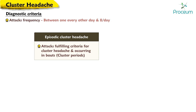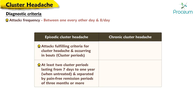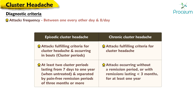Diagnostic criteria for episodic cluster headache require attacks fulfilling criteria for cluster headache occurring in bouts, with at least two cluster periods lasting from seven days to one year when untreated and separated by pain-free remission periods of three months or more. Diagnostic criteria for chronic cluster headache require attacks occurring without a remission period, or with remissions lasting less than three months, for at least one year.